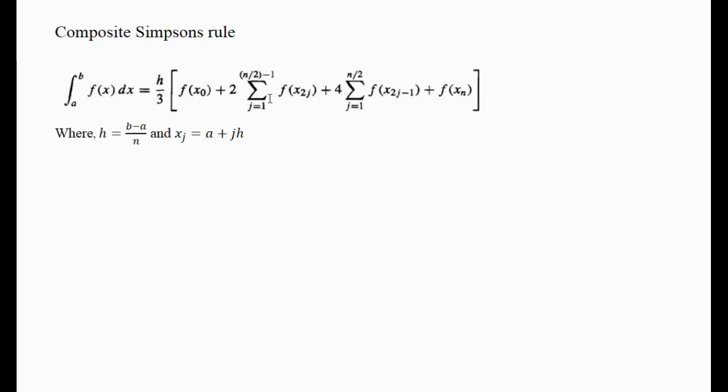There you can see this is just typed up what I had written earlier. There's your formula and the definitions: h is (b minus a) over n, and x_j is a plus jh. Now, one thing to keep in mind here.